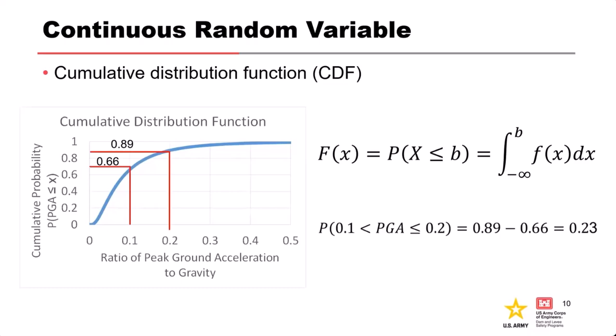We sometimes call this a non-exceedance probability. If your distribution has a lower bound other than minus infinity — such as a log-normal distribution where the lower bound is zero — then the lower limit of the integral would be zero. The generic formulation is integrating from minus infinity, giving you the non-exceedance or cumulative probability.